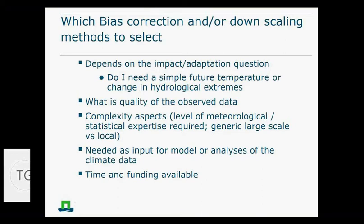Also, what is important is the quality of the observed data. The higher the quality of your observation data, the more complicated a correction we can actually make. If you don't have good observation data, and if you don't have much data on extremes, it's very difficult to correct for that.